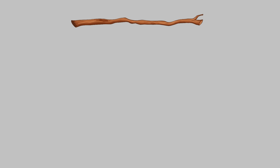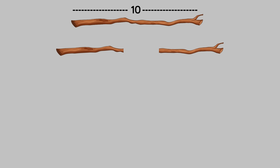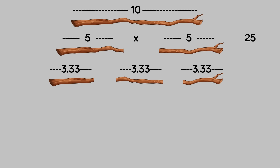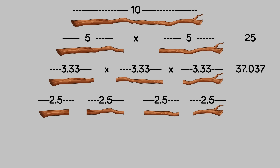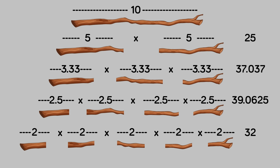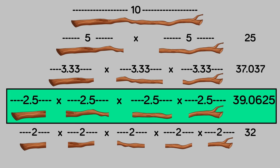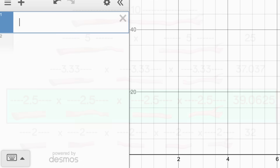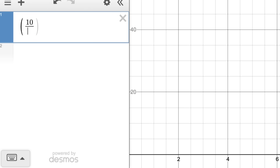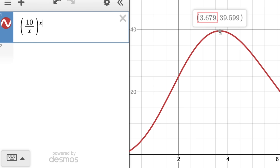Here's a random one. If you take a stick of length 10 and chop it into 2 pieces, the product is 25. Divide it into 3 pieces: product is 37.037. Cut into 4 pieces: product is 39.0625. Make 5 divisions: product is 32. The maximum product happens when there are 4 divisions — when the length of each piece is closest to E. To maximize the product, cut whatever length you have into equal pieces such that each piece is as close to E as possible. For calculus people: the maximum of (length/x)^x occurs at x equals that length over E.